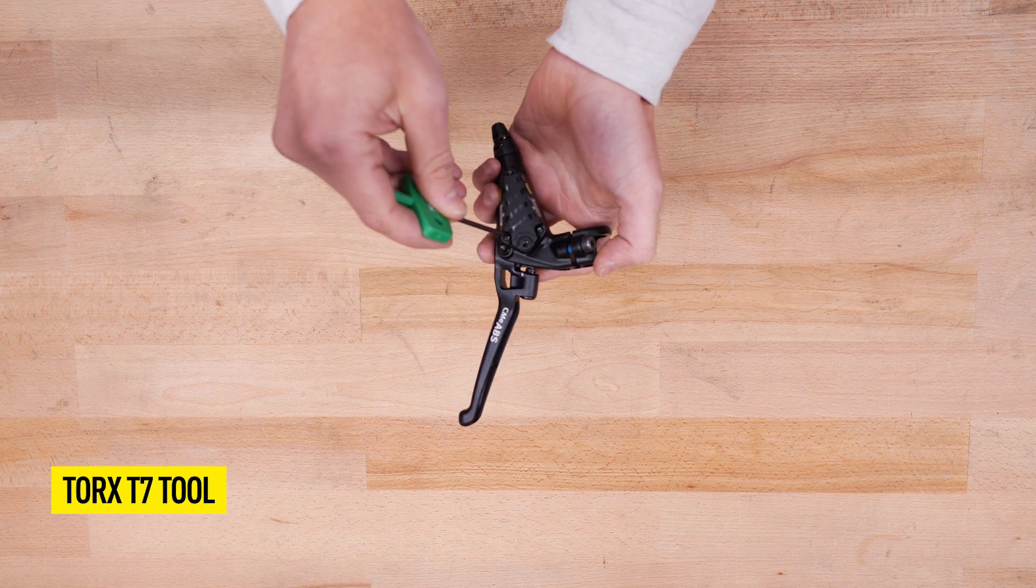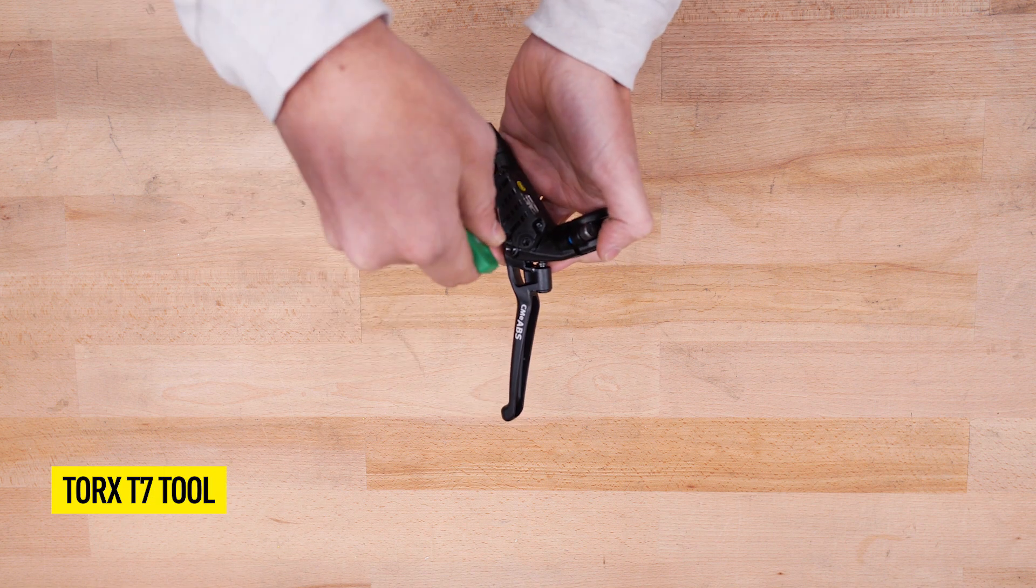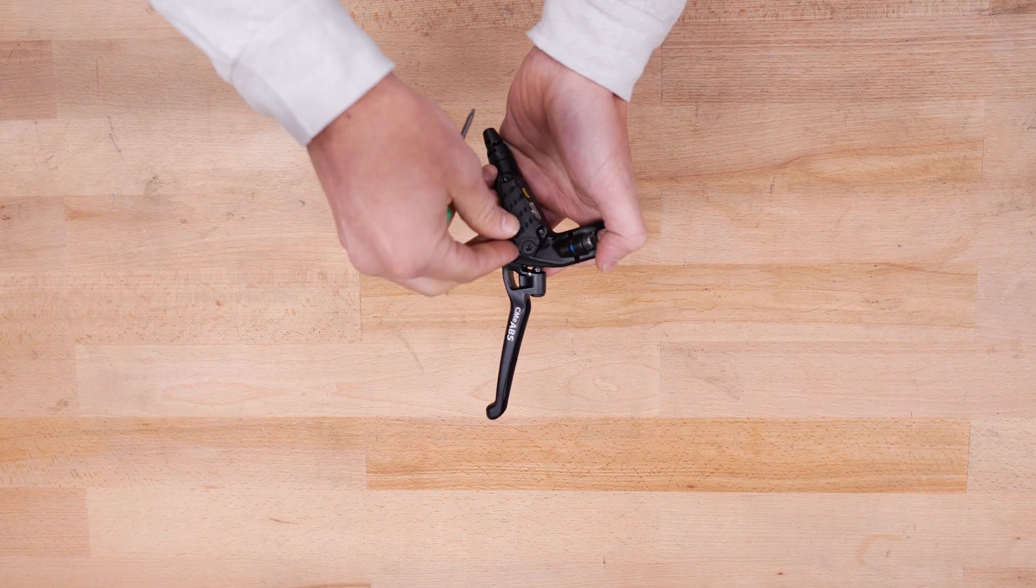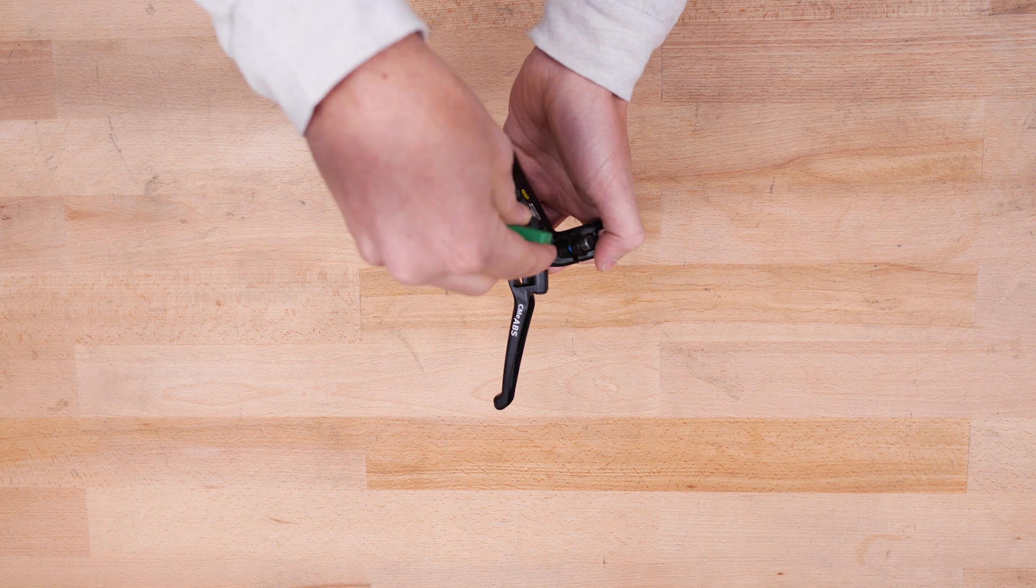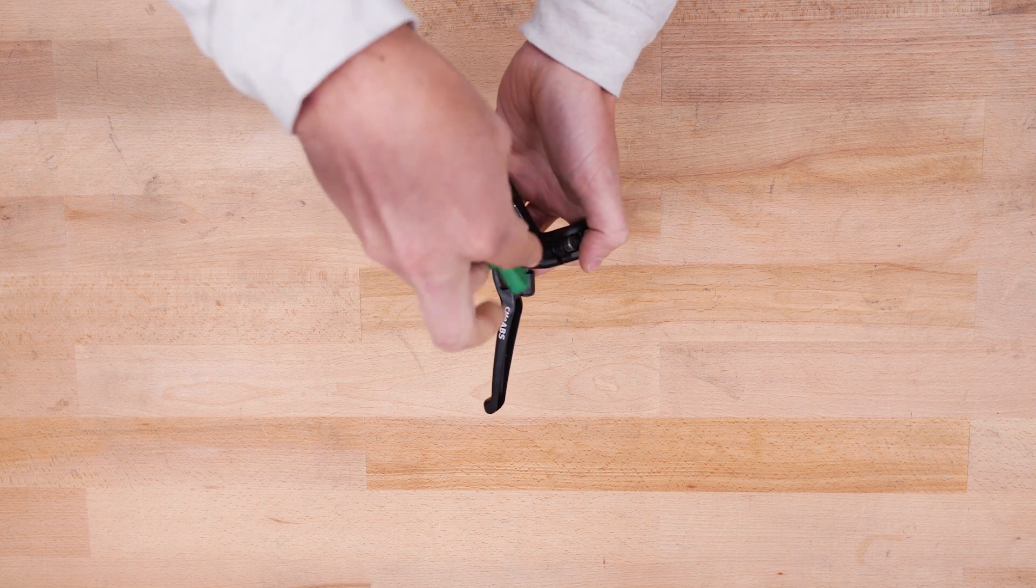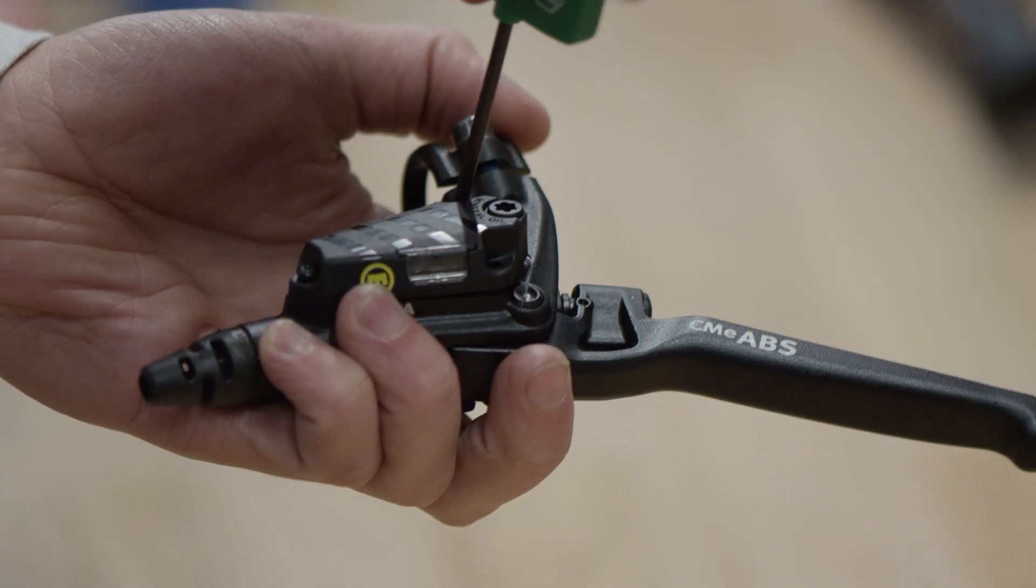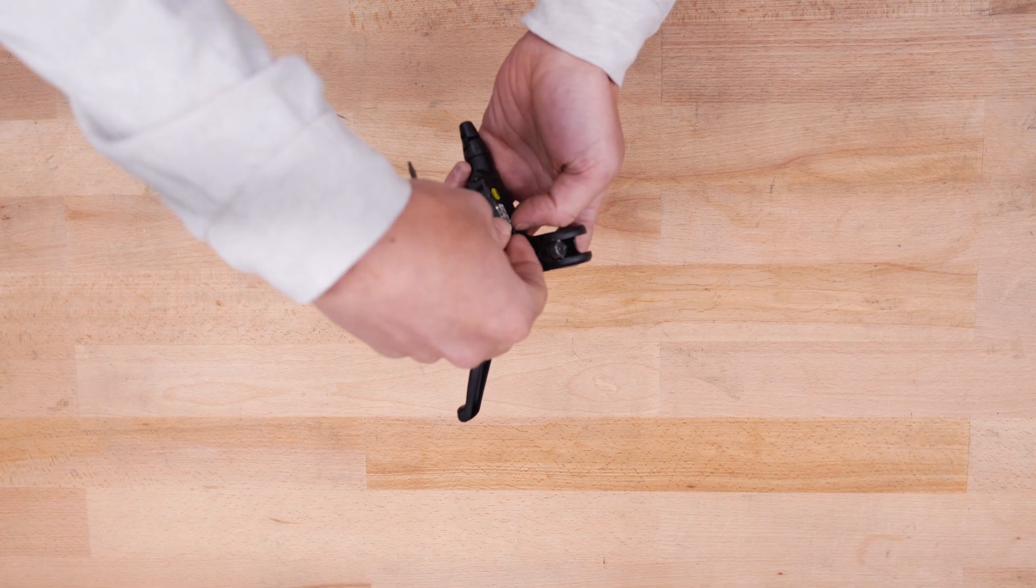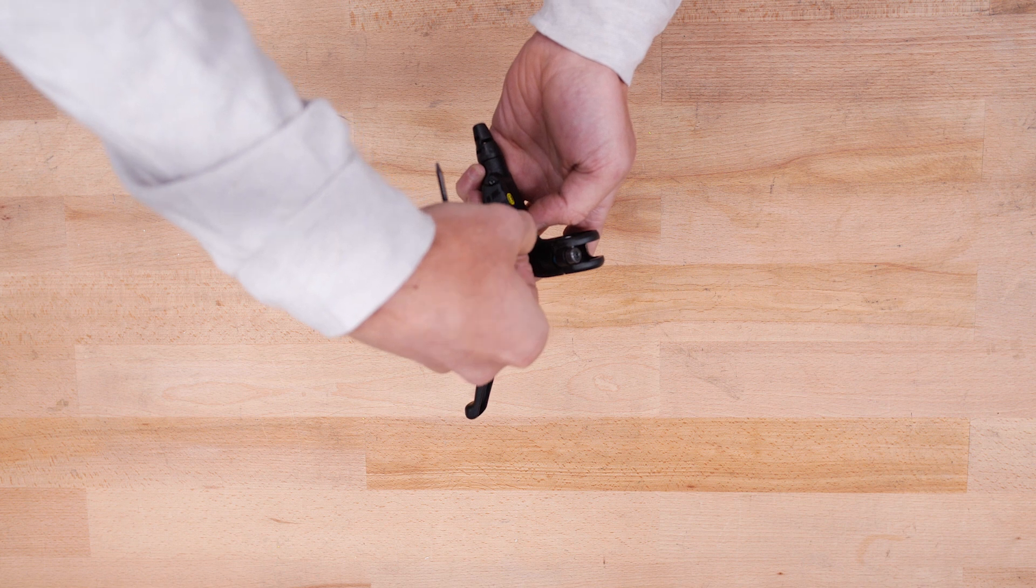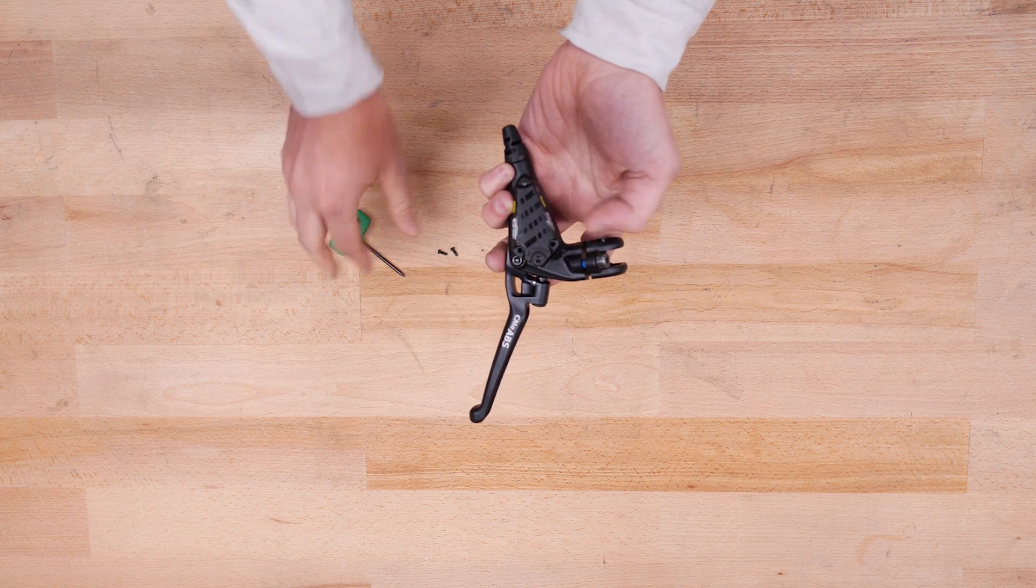To remove the lever bearing pin, the expansion reservoir must be removed or carefully turned to the side as follows. Care should be taken to avoid oil leakage. Remove only the two front screws from the three Torx T7 screws and turn the expansion tank until the lever bearing pin can be pushed out from below.